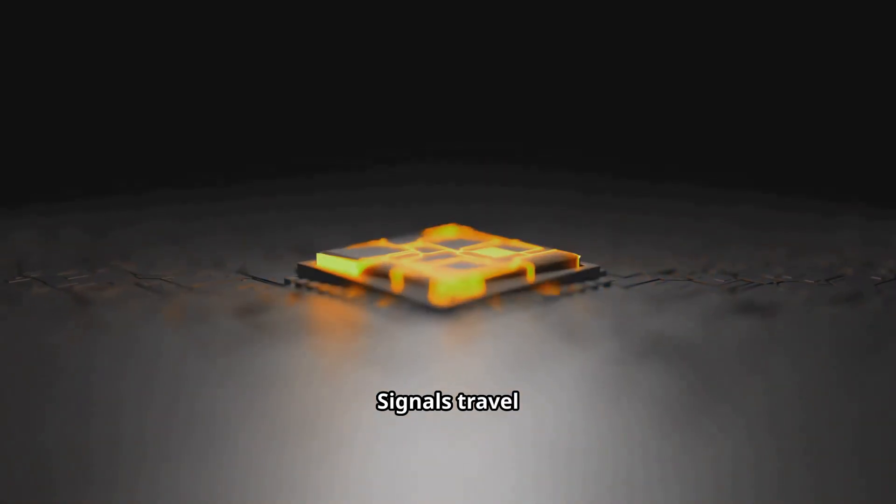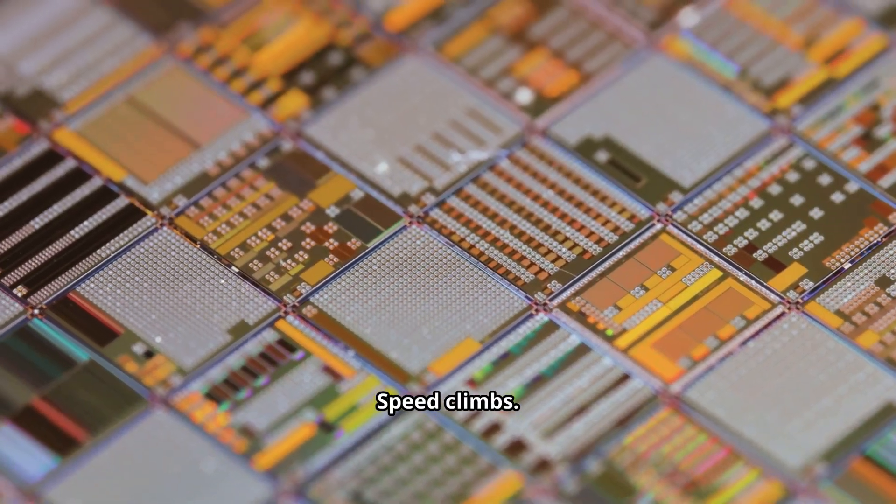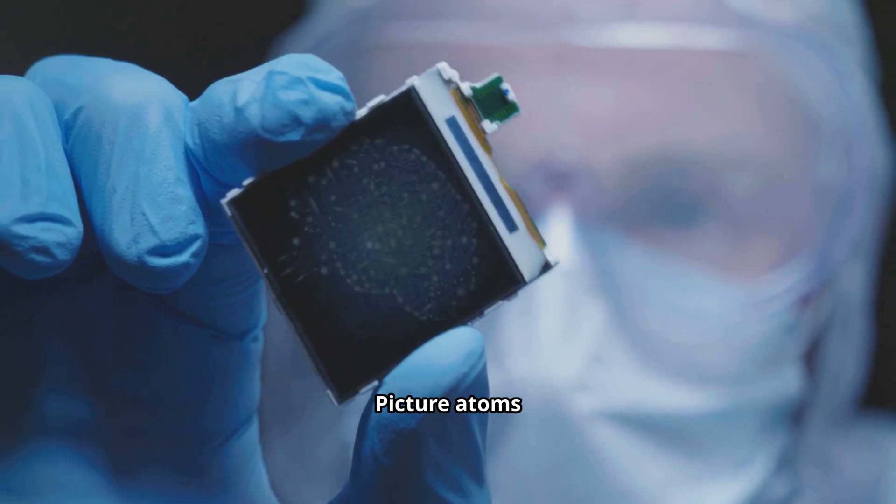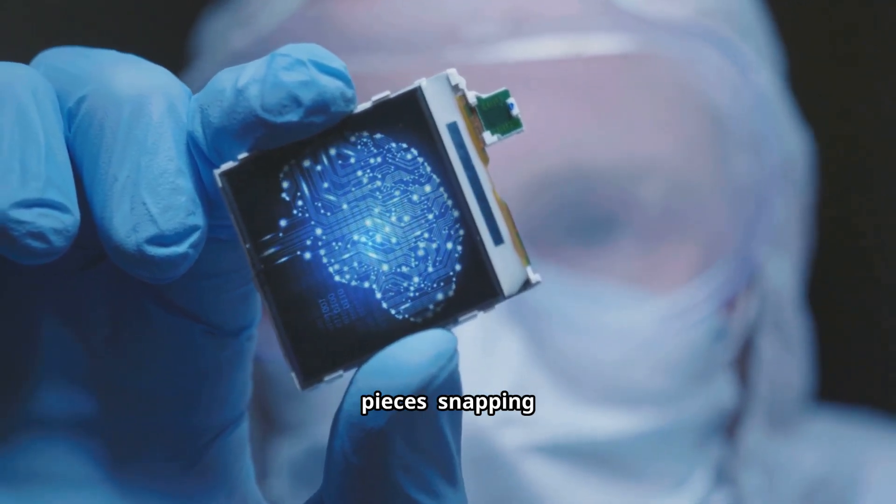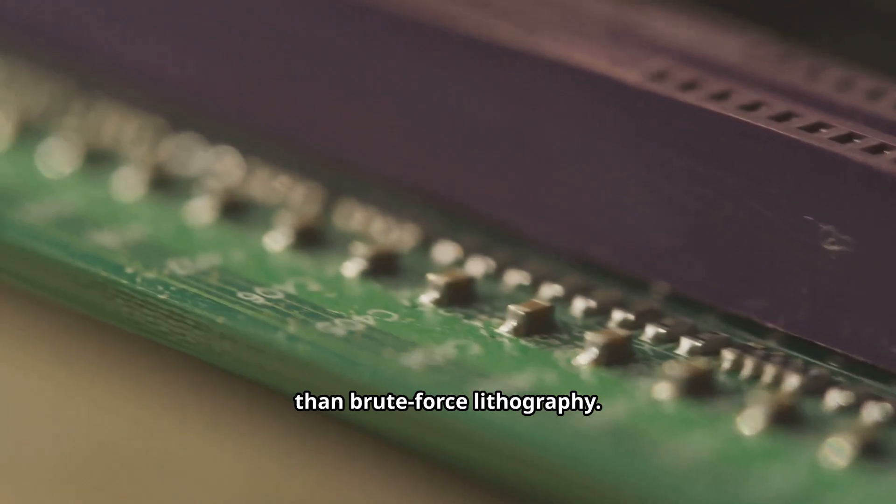Circuits shrink. Signals travel shorter distances. Power drops. Speed climbs. Picture atoms bonding like puzzle pieces, snapping into place with chemical cues rather than brute force lithography.